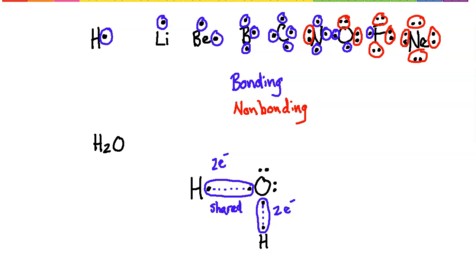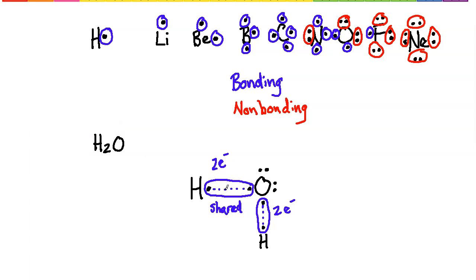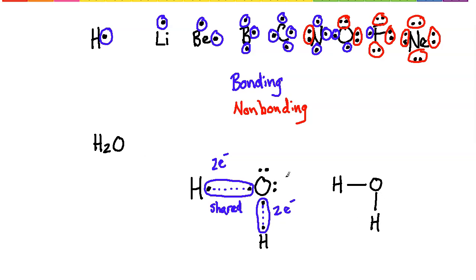Each of these shared links represents two electrons — one from the hydrogen and one from the oxygen — being shared between them. To represent the structure of water, I draw those shared pairs as lines: H bonded to oxygen on one side, another H bonded to oxygen on the other side. Importantly, the non-bonding pairs on the oxygen are still present and must be shown around it.